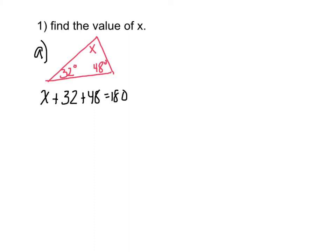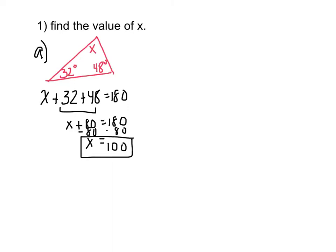Solve the equation. Combine like terms — 32 plus 48 gives you x plus 80. Subtract 80 on both sides, which you should be able to do completely in your head. Therefore, the value of x is 100.